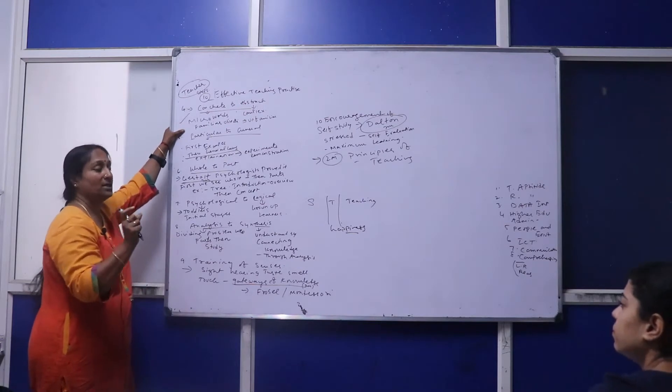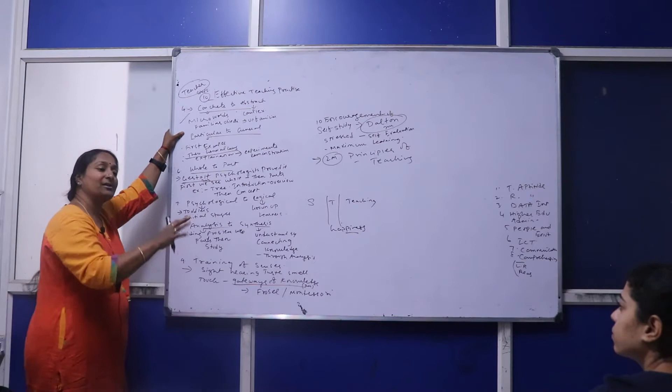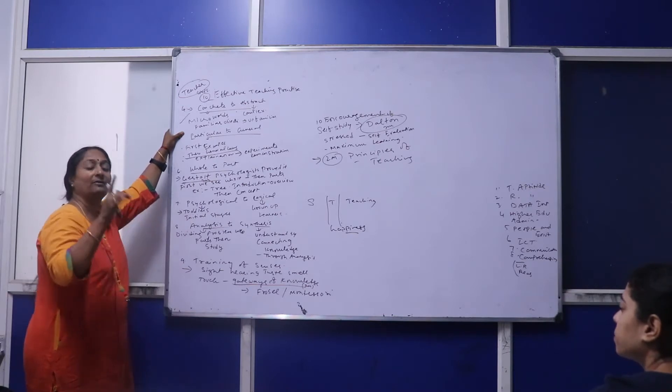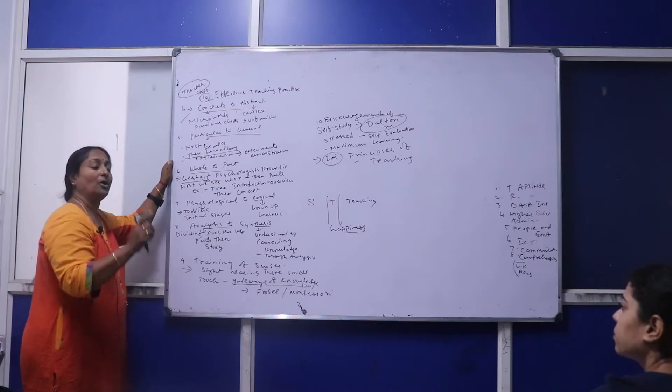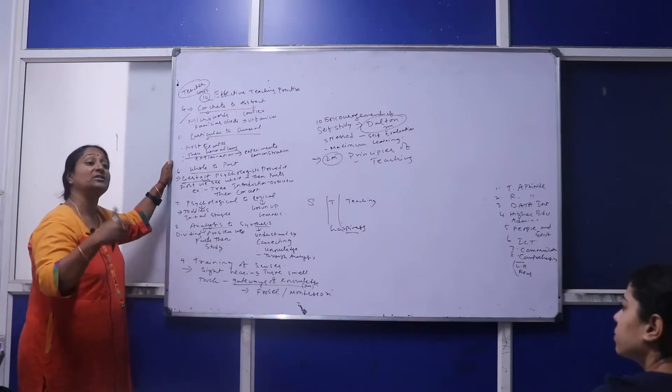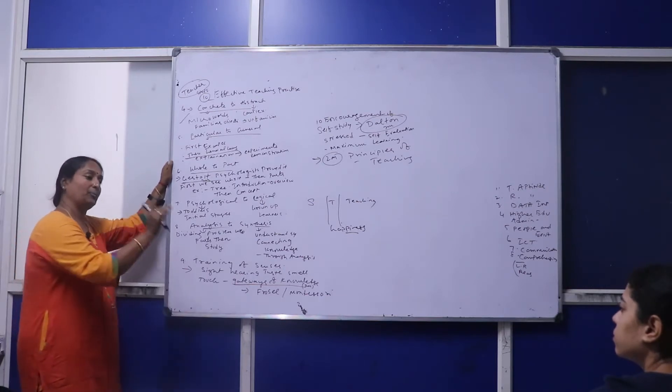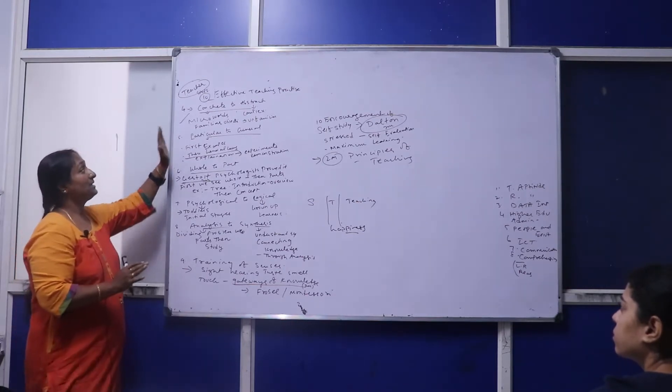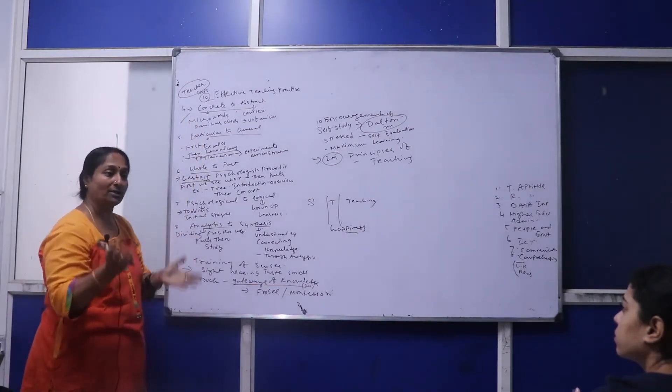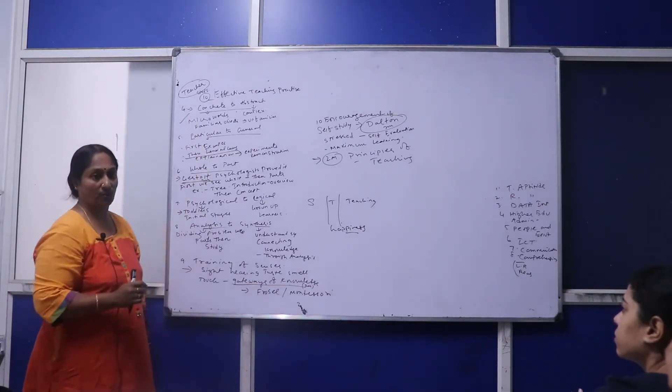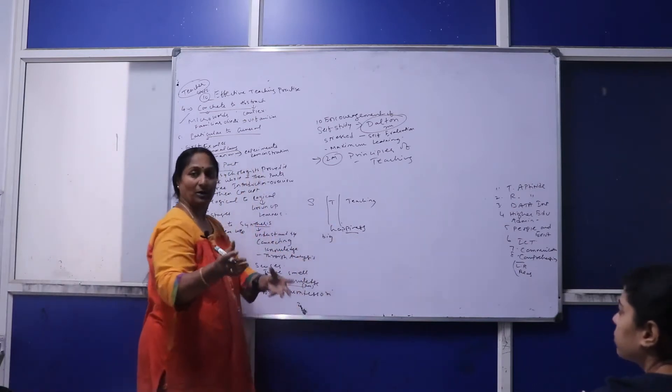Always use micro words—words which children are familiar with, objects they know. Even when teaching graduation or PG students, talk in words they're familiar with. Using unfamiliar words puts them in confusion. Always move from micro words that are very simple with no other meaning, then go to complex words.